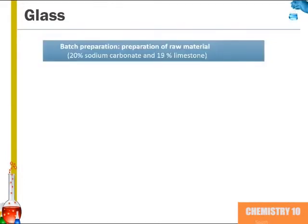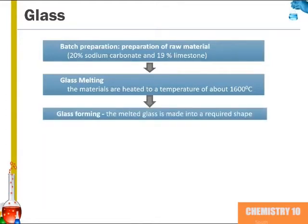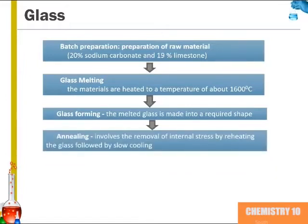We'll now go through the process of making glass. To start, we have the preparation of the raw materials, where we have 20 percent sodium carbonate and 19 percent limestone. From there, the materials are heated to a temperature of around 1600 degrees Celsius. The glass is then formed and made into the required shape. The annealing step involves the removal of internal stresses by reheating the glass followed by a slow cooling.